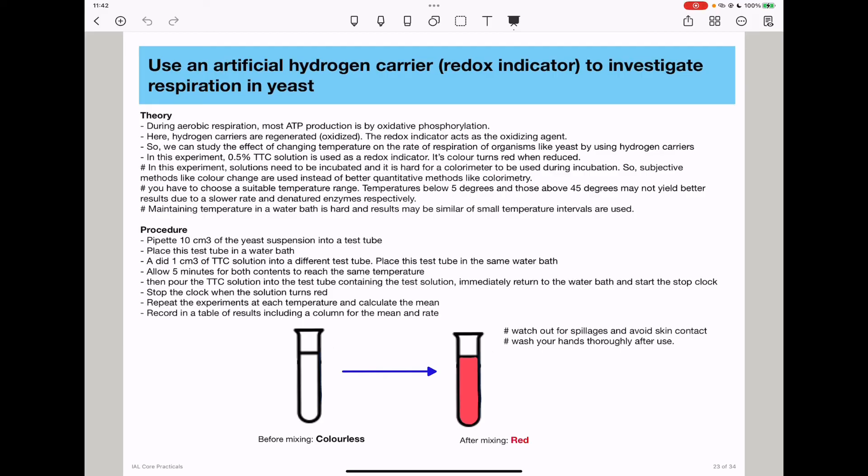So the observable color change is from colorless to red, and this is because the TTC has been reduced.